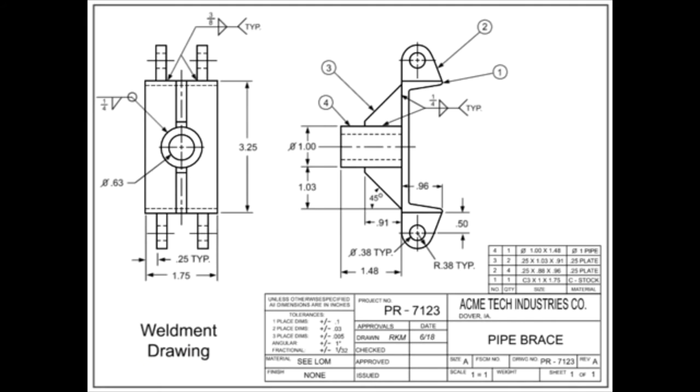Weldment drawings can also be called inseparable assembly drawings. Welding symbols that indicate the length, type, and other information about the weld are shown in the field of the drawing to indicate the location of the welds.